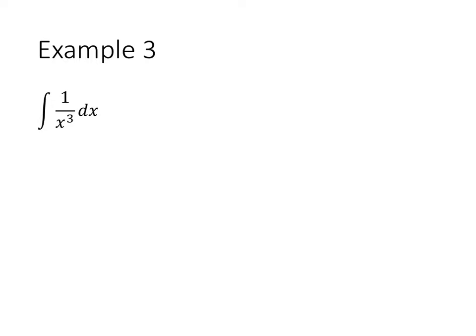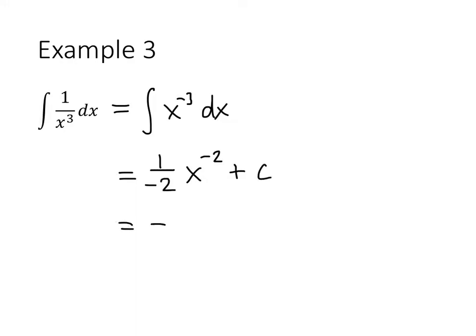This time we have 1 over x cubed. We don't have a quotient rule for antiderivatives, so we rewrite the fraction as x to the minus 3, then use our power rule again. We add 1 to negative 3 to get negative 2, then divide by that new power. We can simplify this as negative 1 half x to the minus 2, plus c.